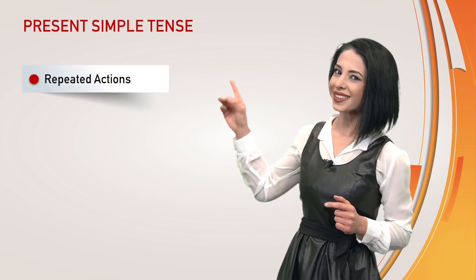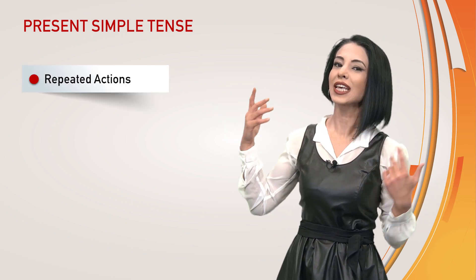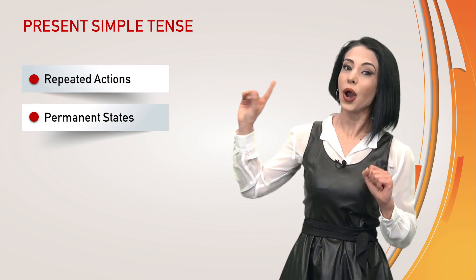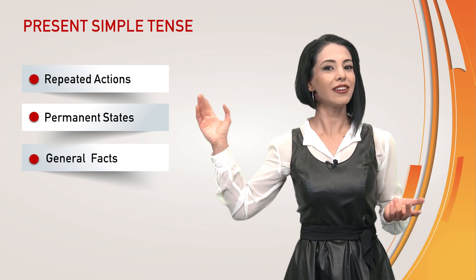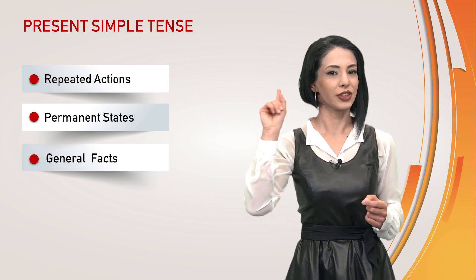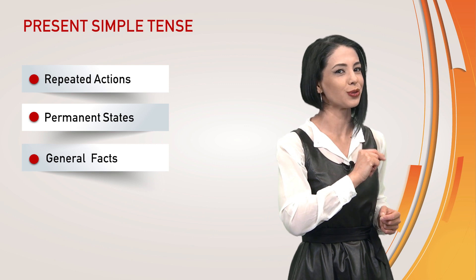Today we are going to talk about simple present tense, positive and negative sentence structure. We use the simple present tense to talk about repeated actions or events, permanent states, or general facts which are always true.